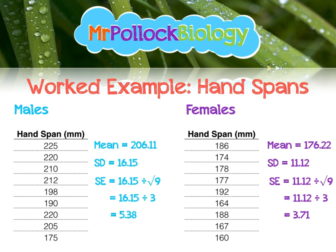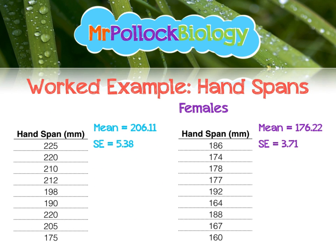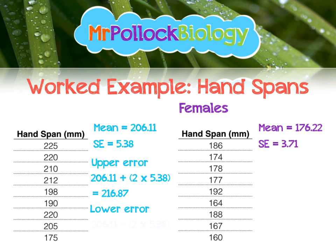The next step is to calculate our upper and lower error bars. For males, the upper error bar is the mean (206.11) plus two lots of the standard error, which gives us 216.87. To calculate the lower error bar, we do 206.11 minus two lots of the standard error, which gives us 195.35.